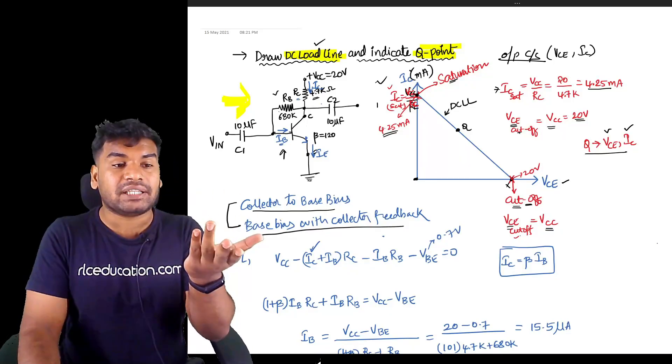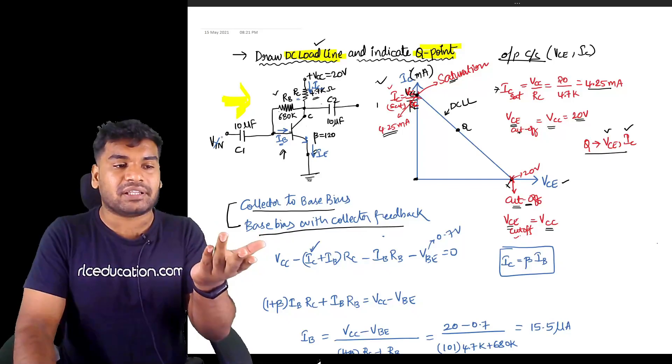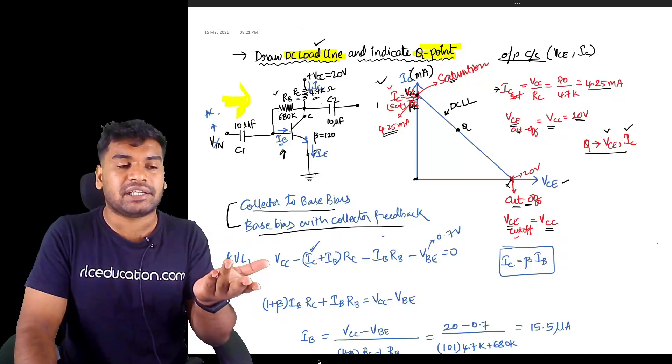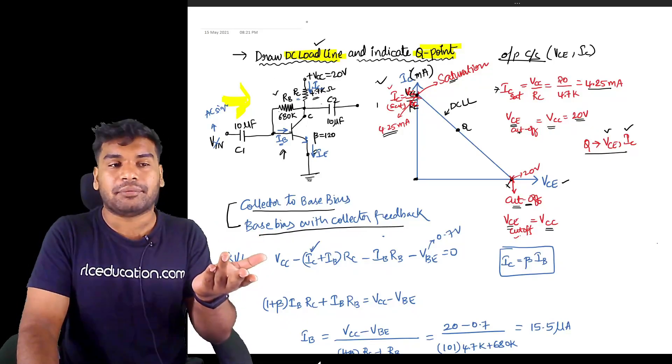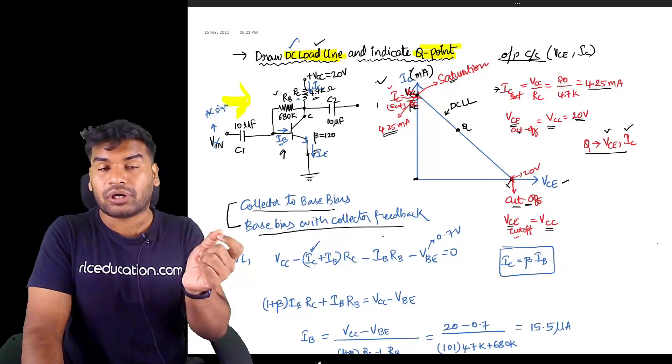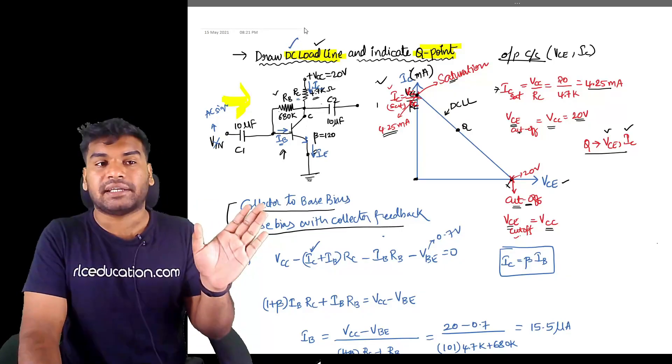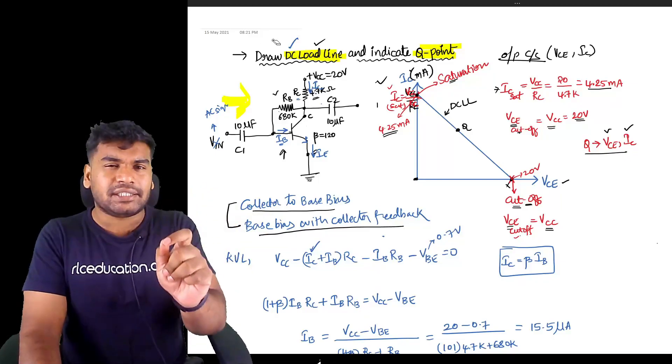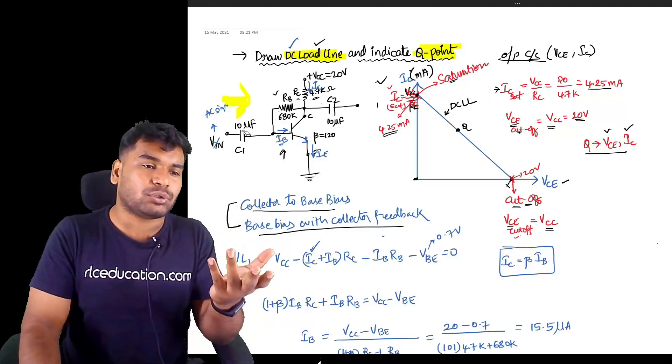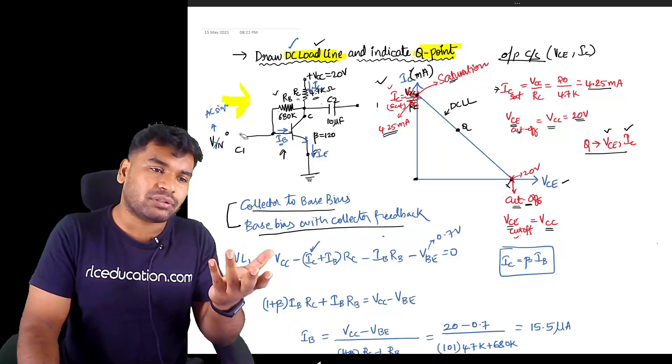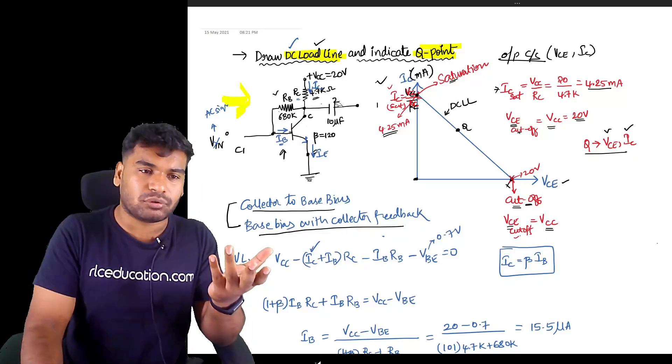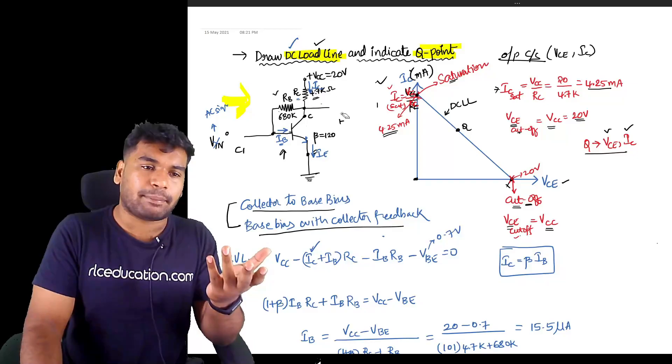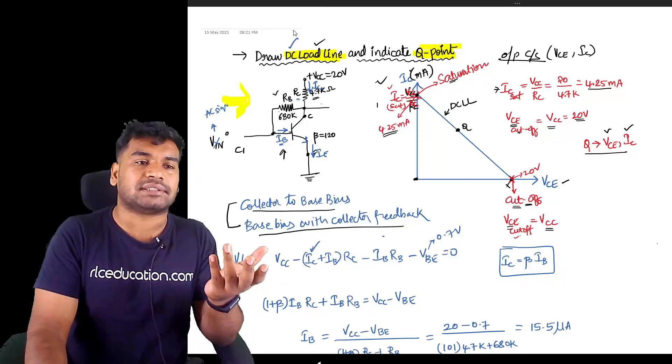But from where are you getting this IB? Not from this Vin. This Vin represents the AC signal input. Now you're drawing DC load line, that means you're not applying any AC signal. Only under DC condition - under DC condition what is a capacitor? Capacitor is an open circuit. So just open circuit this capacitor, it is nowhere useful for us now.